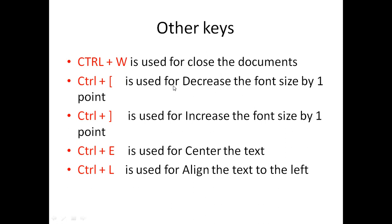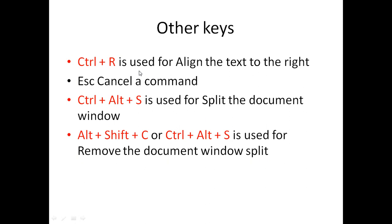Ctrl plus the opening bracket decreases the font size by one point. Ctrl plus the closing bracket increases the font size by one point. Ctrl plus E is used to center the text, aligning it at the middle position. Ctrl plus L aligns the text to the left, and Ctrl plus R aligns the text to the right. The Escape key is used to cancel a command.